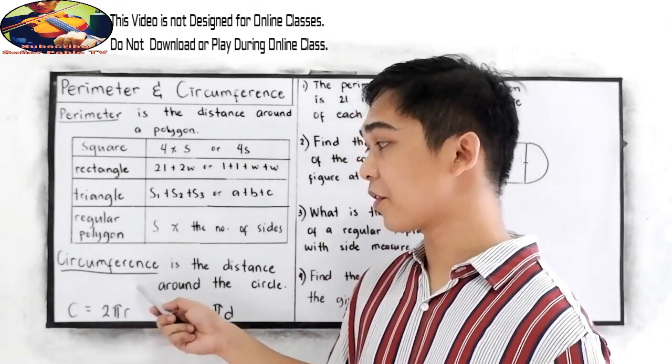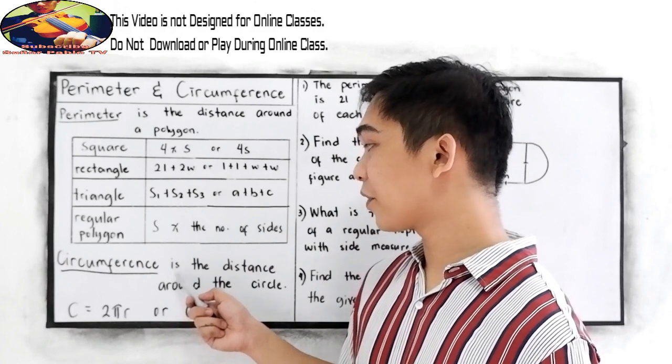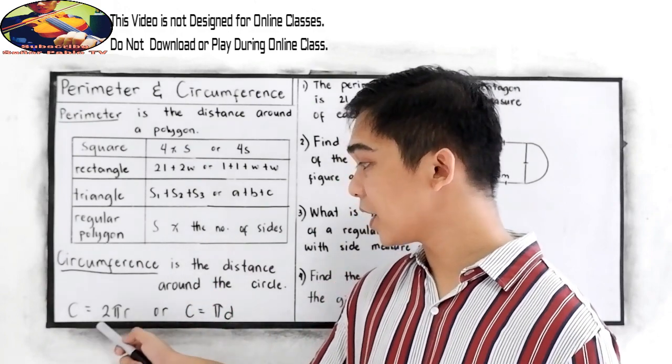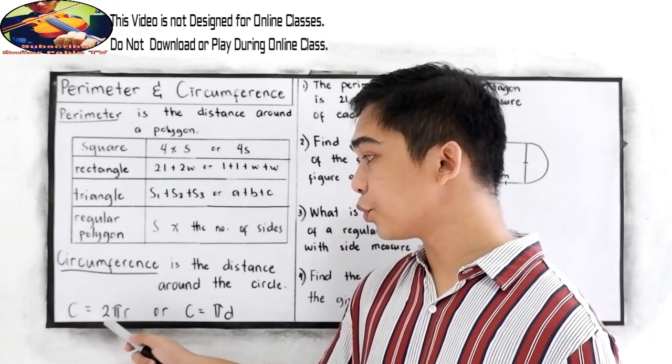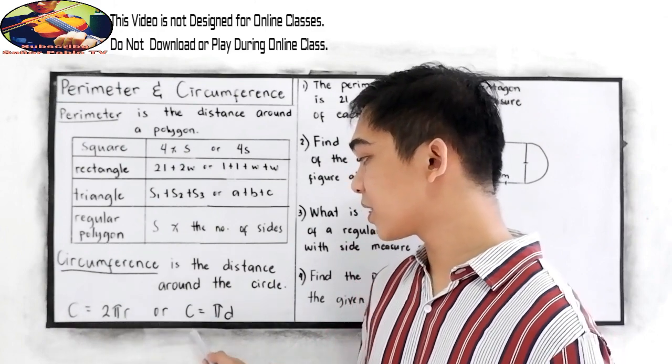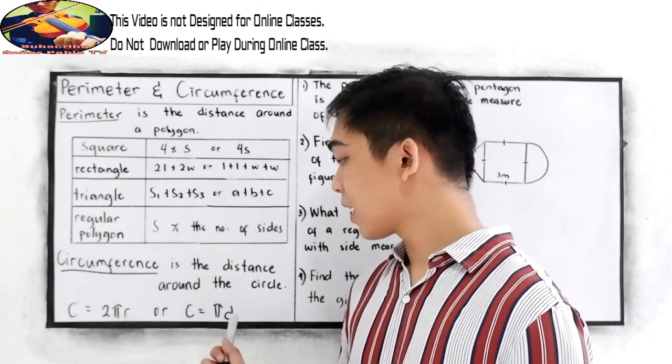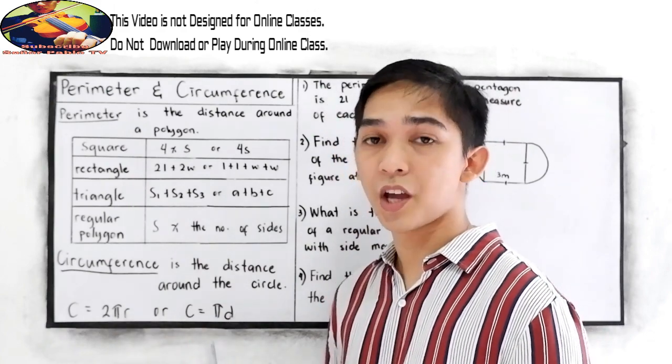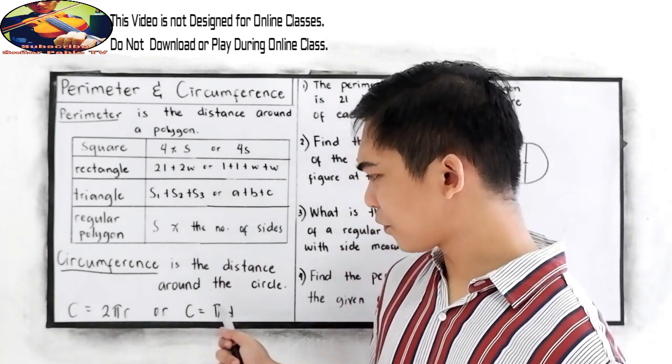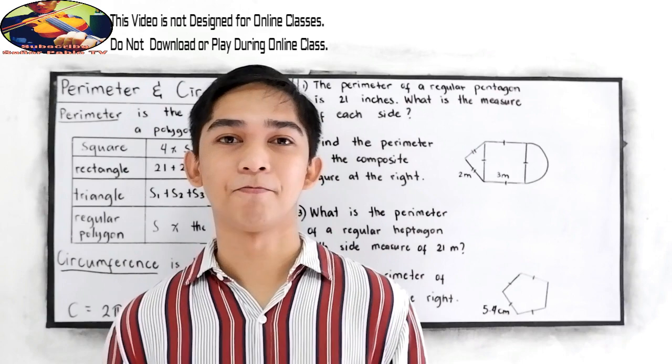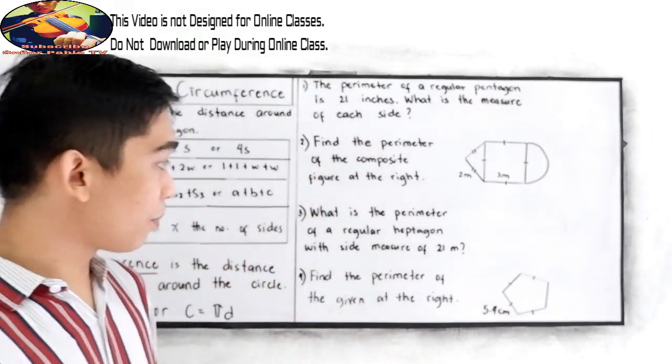And we have a circumference. Circumference is the distance around the circle. So we have a formula here: C equals 2 pi r, or C equals pi d. R is our radius and d is our diameter. And of course pi, we can use 3.14.